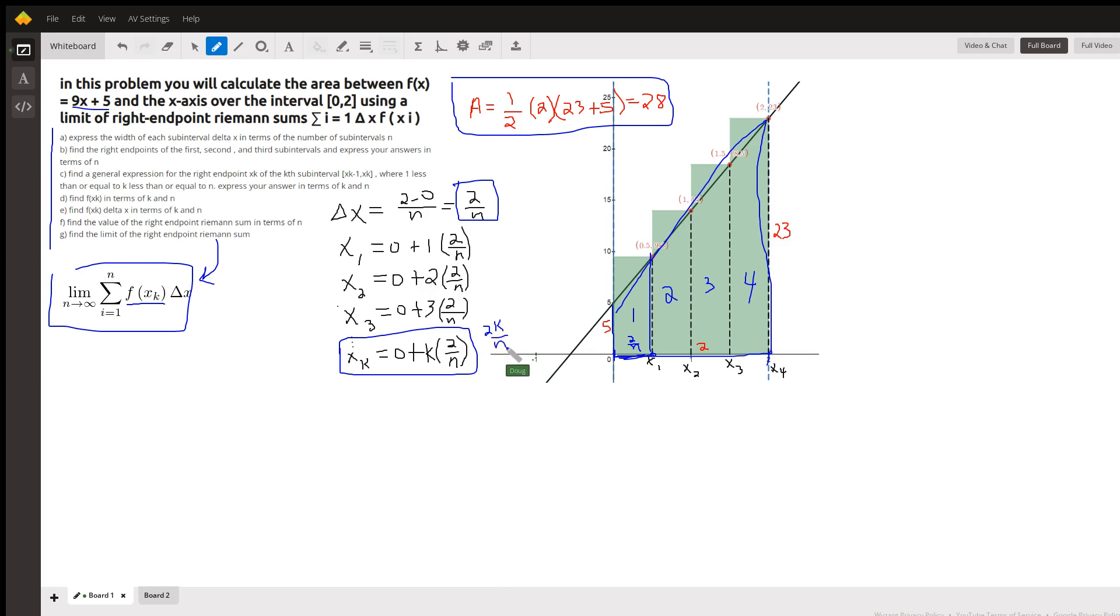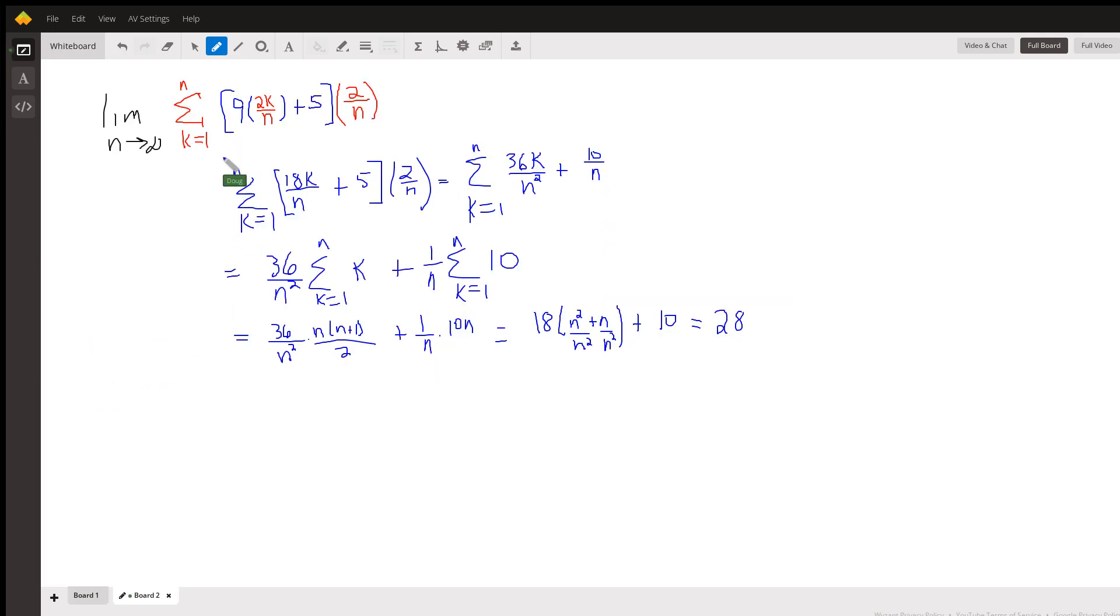Okay, so these are the values we're going to plug into this formula right here. But f is 9x plus 5, so let's see what that looks like. The limit as n approaches infinity of the sum from k equals 1 to n, the number of rectangles. We're plugging in x sub i, or x sub k I should say, into the function. So this bracketed expression gives us a formula for the height of the kth rectangle.